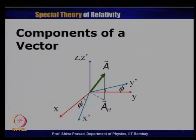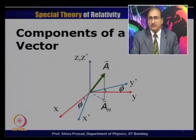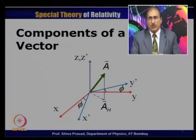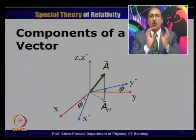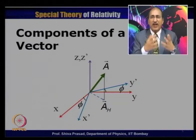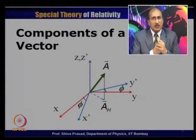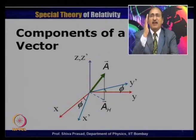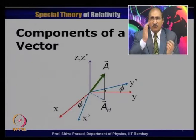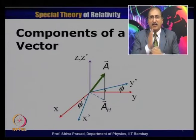If we ask somebody in high school what is a scalar and what is a vector, they would normally say that a vector has both a magnitude and a direction, so it can be represented by an arrow. There are certain quantities which do not have a direction — for example, mass of a body has no direction. But weight has a direction, because weight is a force. So normally we say a vector can be represented by an arrow whose length represents the magnitude and whose direction represents the vector's direction.